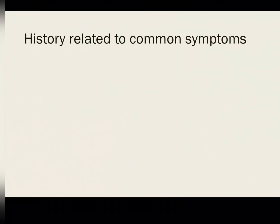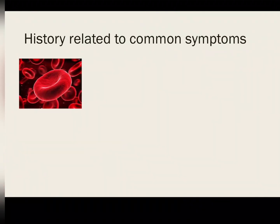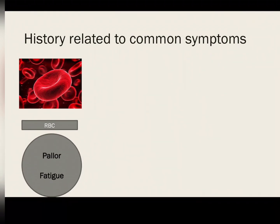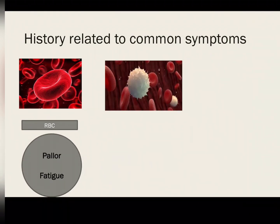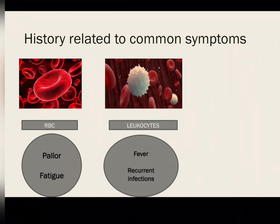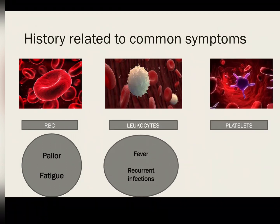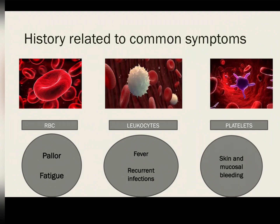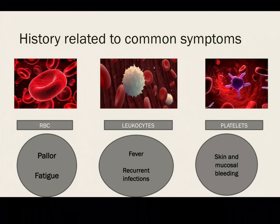Now, history related to common symptoms. When there is decreased hemoglobin or RBCs, there will be pallor and fatigue. When there is a decrease in TLC count, there will be increased infections and the symptom will be fever. And when there is a decrease in platelet count, there will be increased bleeding tendencies with superficial bleeds like petechiae and purpura.